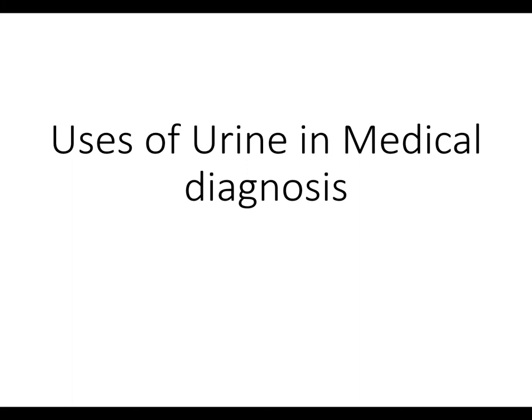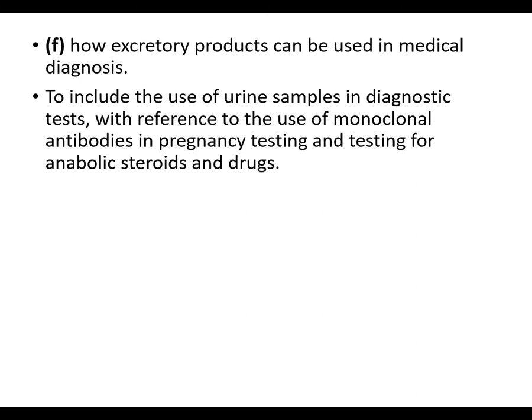This is the last video on the kidney - module five, the first chapter. This final lesson is about the uses of urine in medical diagnosis. The specification says you need to know how excretory products can be used in medical diagnosis, including the use of urine samples in diagnostic tests, with reference to monoclonal antibodies in pregnancy testing and testing for anabolic steroids and drugs.